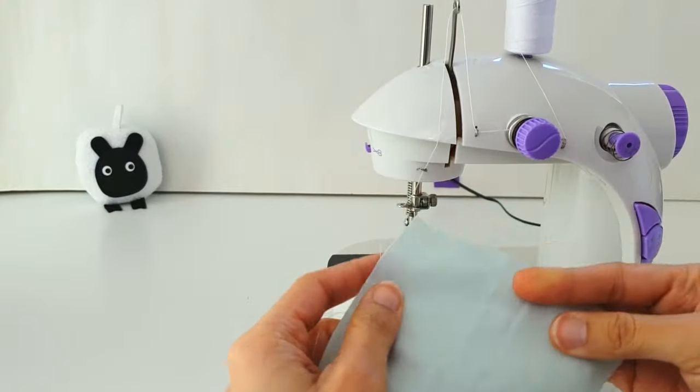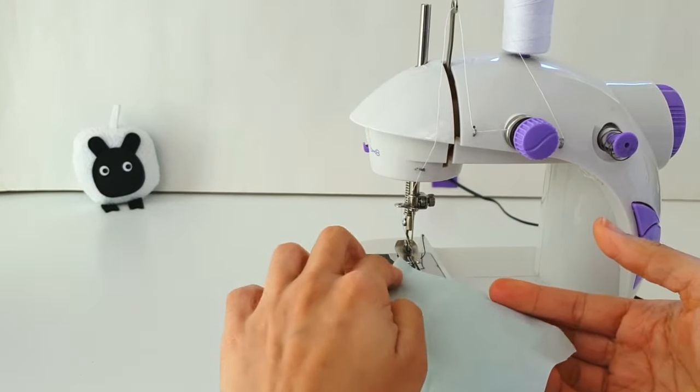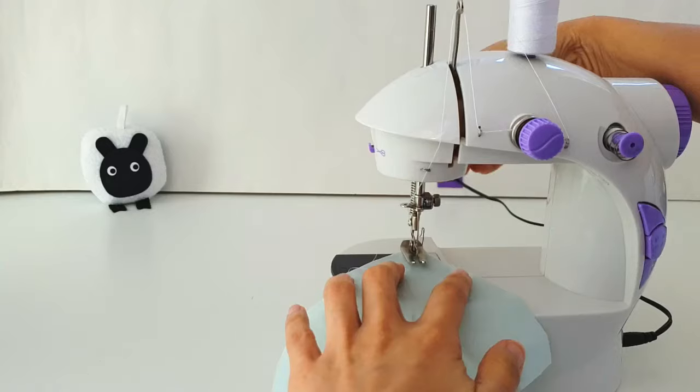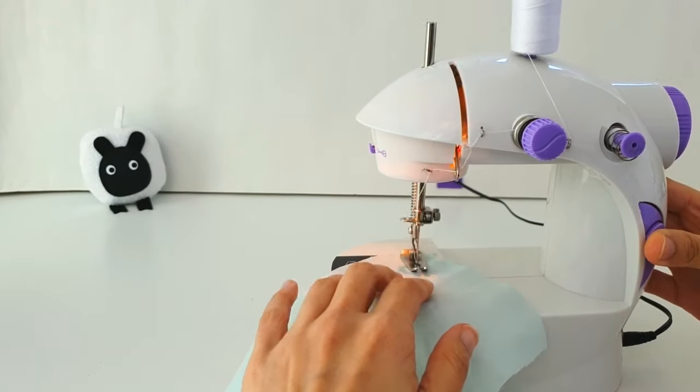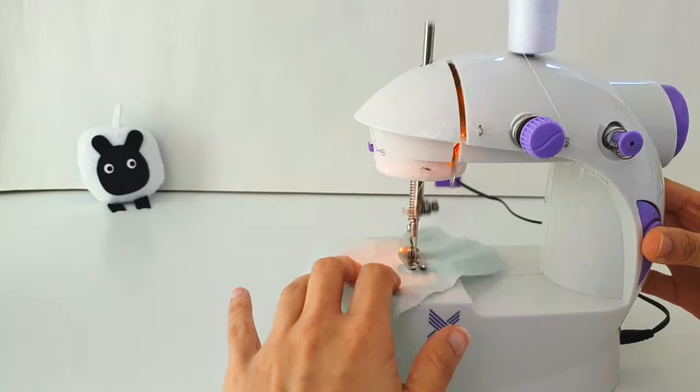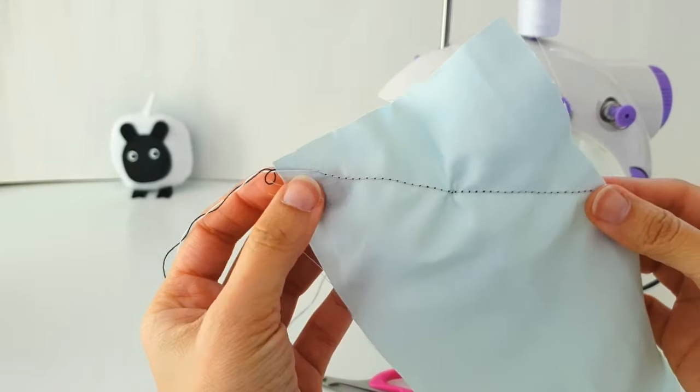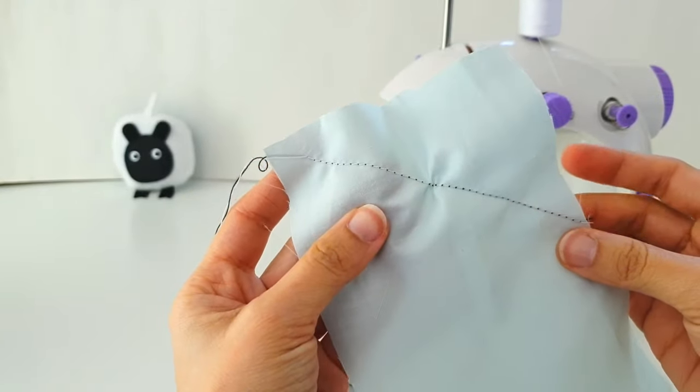So before you start sewing, this is what you're going to do. You're going to take a sample fabric of your own choosing and place it underneath the presser foot on the diagonal. And now we're going to sew a straight line. So we've now stitched a straight line. And you can see the fabric's puckering up a little bit.